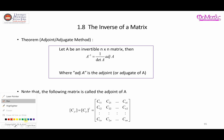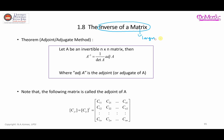Hi, assalamualaikum warahmatullahi wabarakatuh. In this video I'm going to talk about how you can find the inverse of a matrix larger than a two-by-two matrix. I'm going to demonstrate the use of the adjoint or adjugate method. We assume that A is an invertible n×n matrix, and to find its inverse you multiply one over the determinant of A with the adjoint of A.